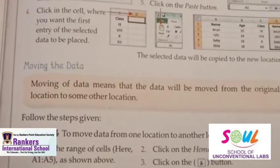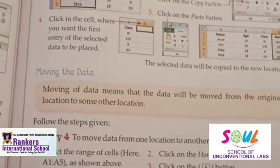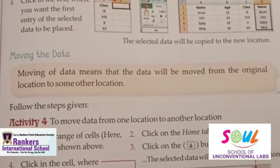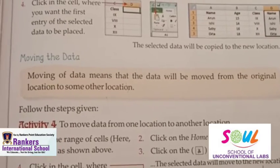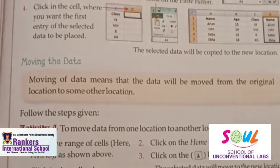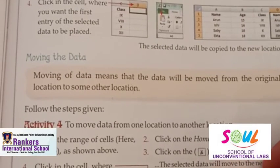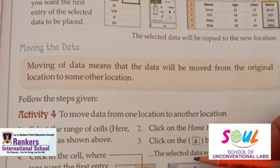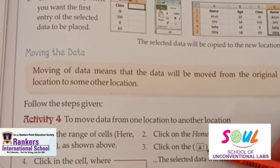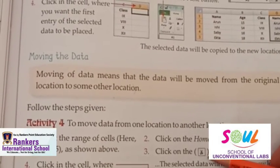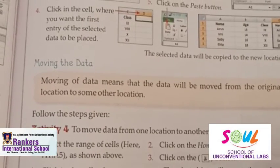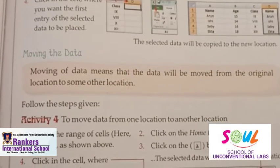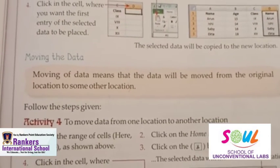To move data: select the range of cells — for example, A1 to A5. Click on the Home tab, then click the Cut button. The selected data will be moved to a new location. Click on the destination cell where you want the data to be placed, then click the Paste button.